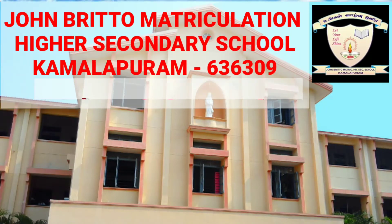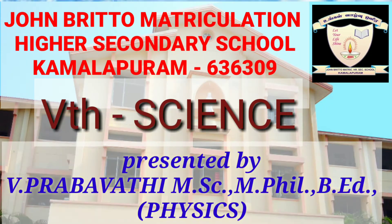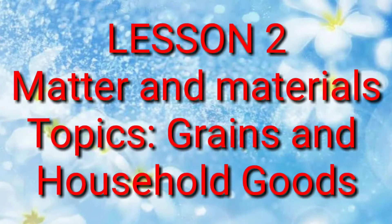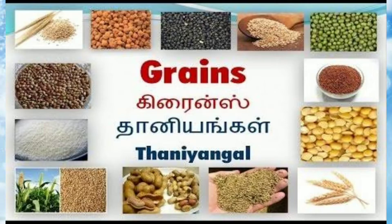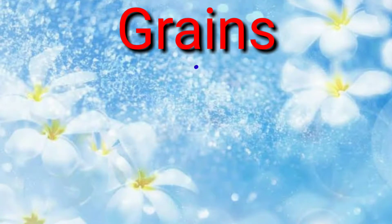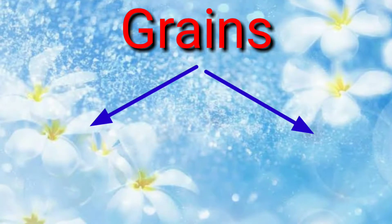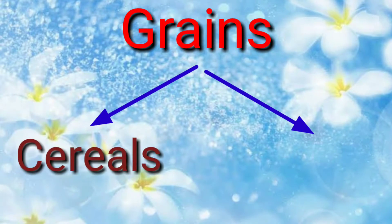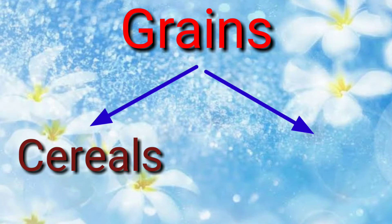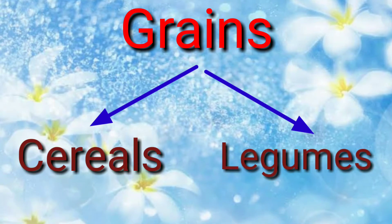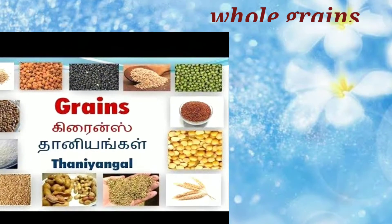Hello everyone, welcome to science class. Last class we learned the topic fibers. In this session we are going to learn the topic grains. Grains are small, hard and dry seeds. Two main types of commercial grain crops are cereals and legumes. Some whole grains are wheat,